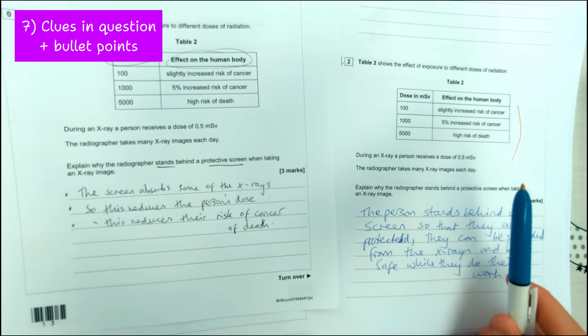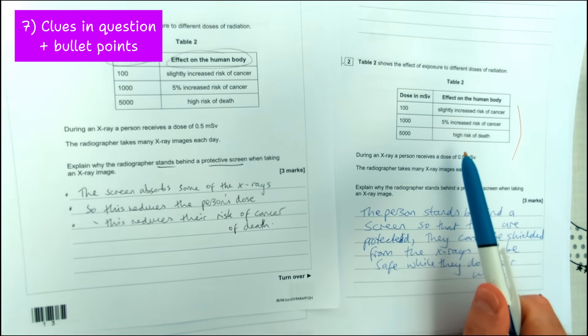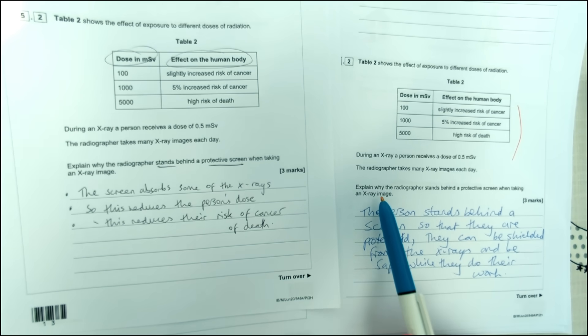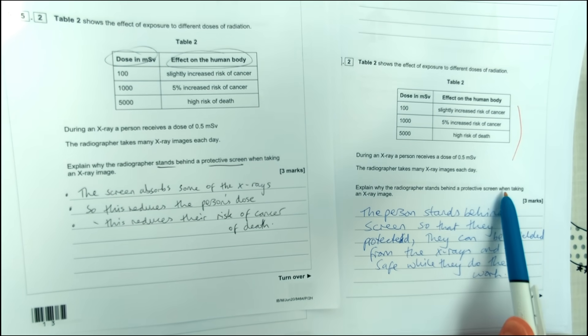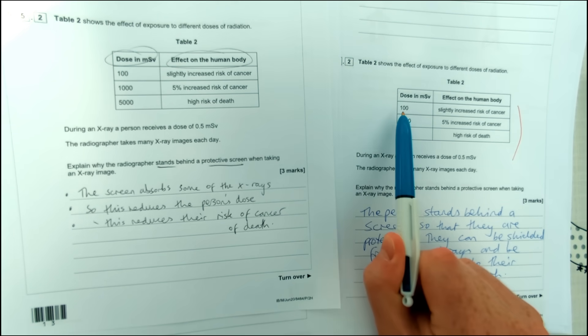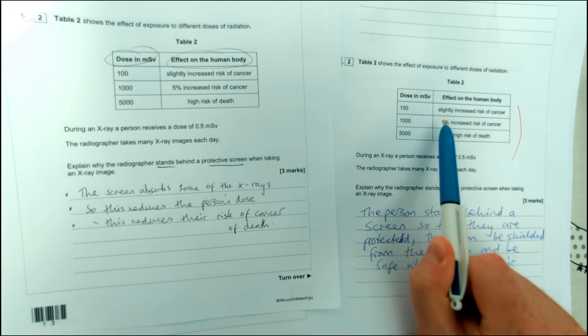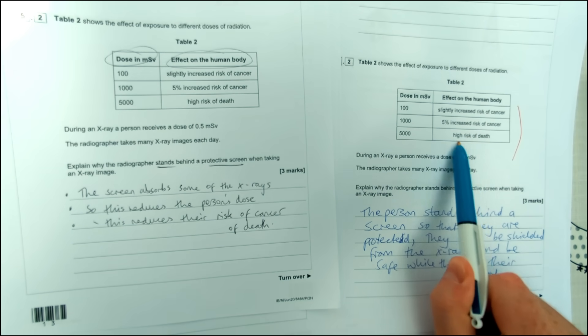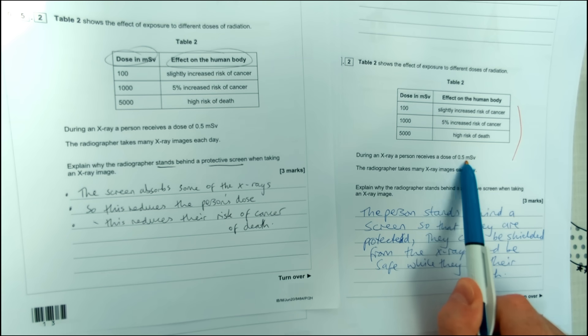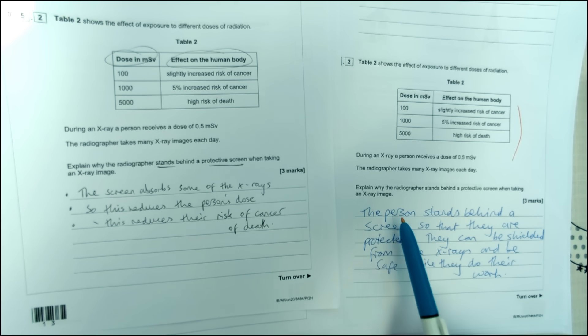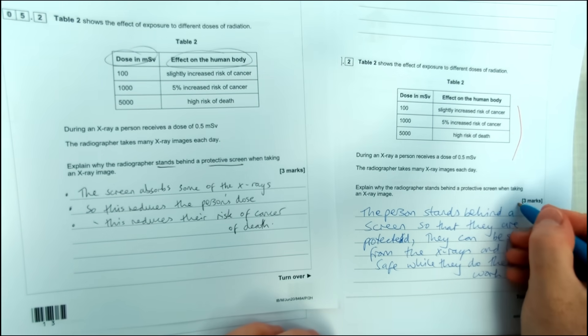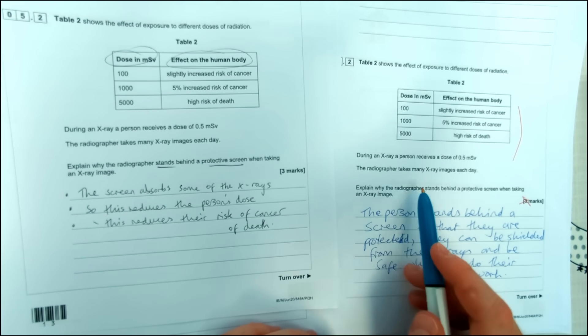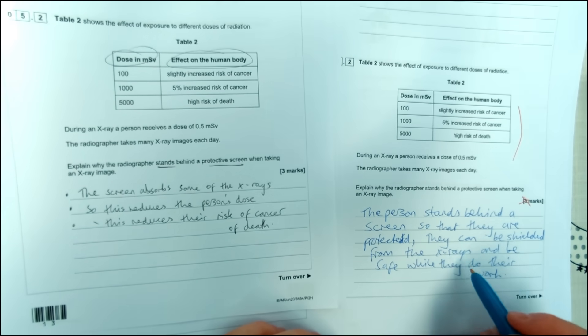This question is quite a tricky one. It's quite poorly answered on the year it came out, however there's lots of clues in the question that can help us answer it more effectively. The question says explain why a radiographer stands behind a protective screen when taking an x-ray. The information they give you is how different doses of radiation affect the body, obviously increasing risk of cancer and then death, and it says during x-ray a person receives a dose of 0.5 and they may take many x-ray images a day. This person said the person stands behind a screen so they're protected. Now that's not going to be any marks for this question unfortunately. It's not a detailed enough explanation.